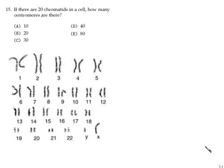Let's start on the first question. Let's read the question: if there are 20 chromatids in the cell, how many centromeres are there? Let me tell you about the differences between these words first.